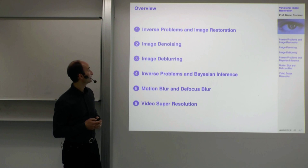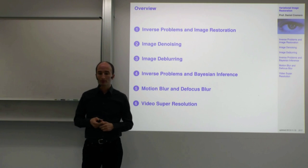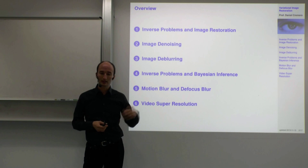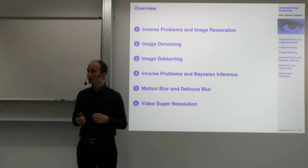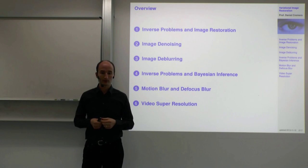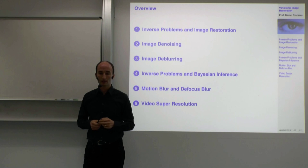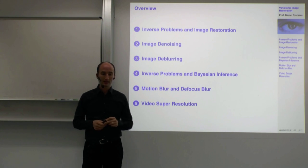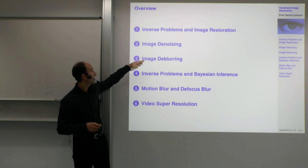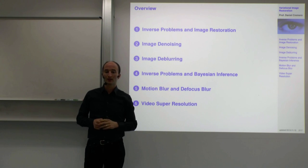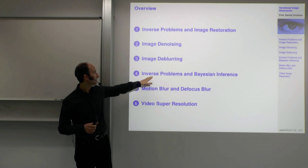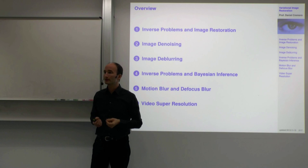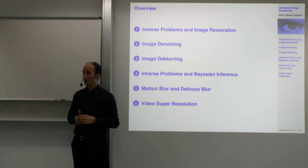There are six parts in today's chapter. The first is inverse problems and image restoration — the general concept of what an inverse problem is, and some aspects like well-posedness or ill-posedness, so you'll hear some of the terminology used in that field. Then we'll see some examples: image denoising once more, and image deblurring.